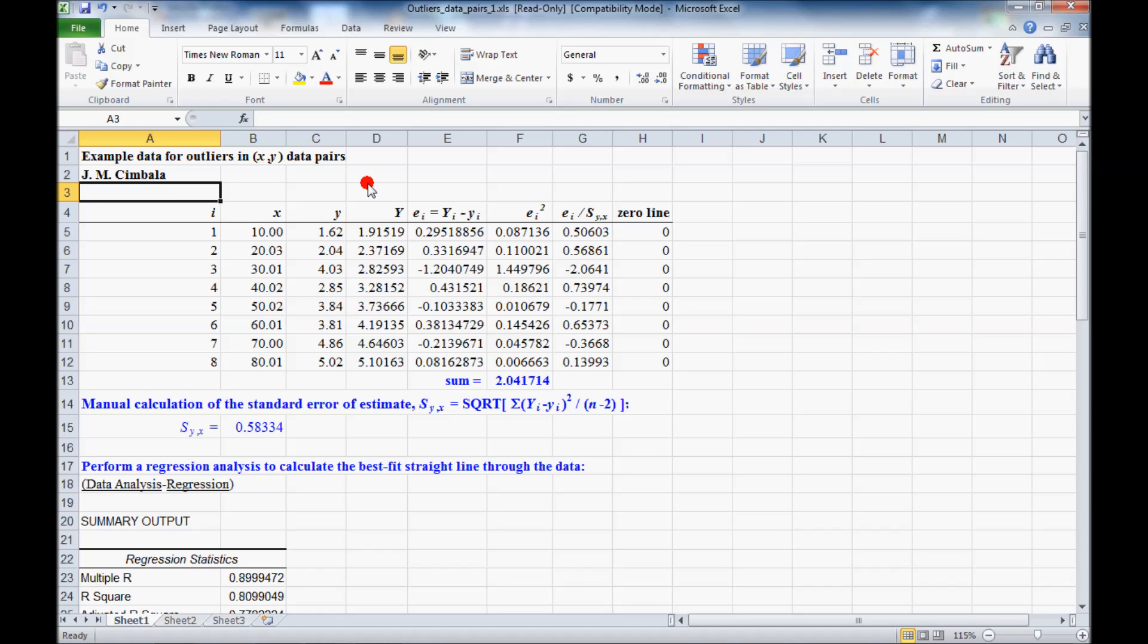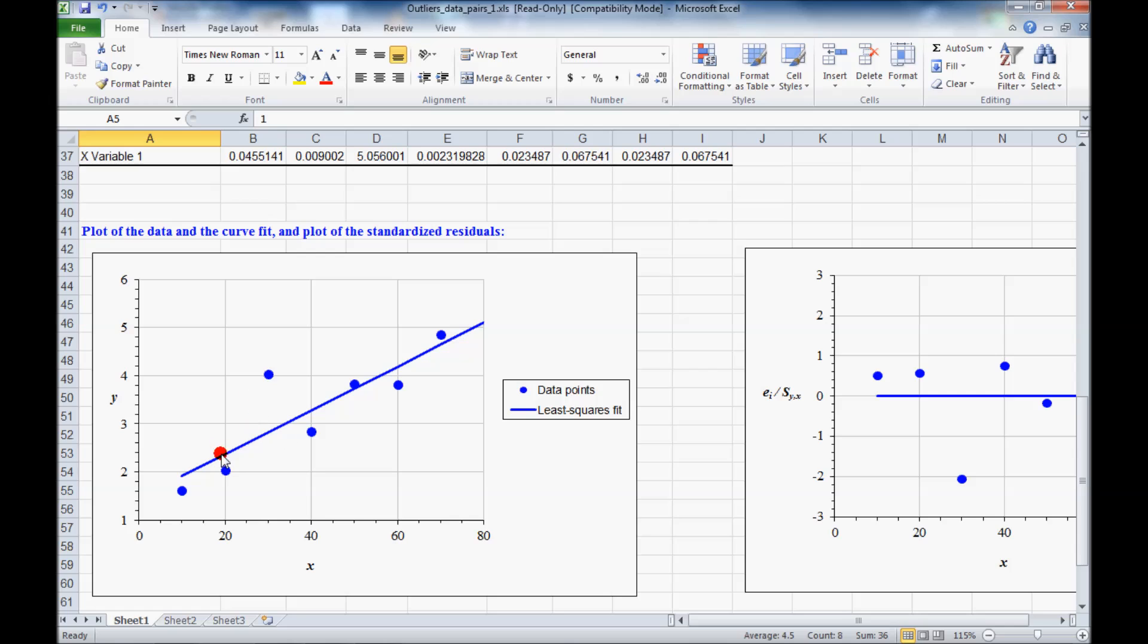Let's use Excel to find out if we have any official outliers in a data pair. So we have this set of data pairs, X and Y, X and Y data pairs. There's eight of them. And if we plot them, we see this.